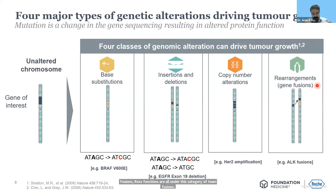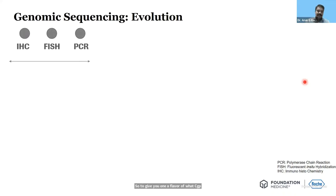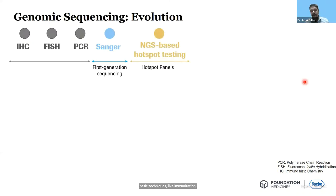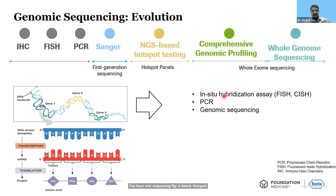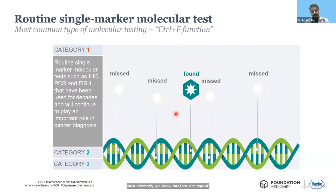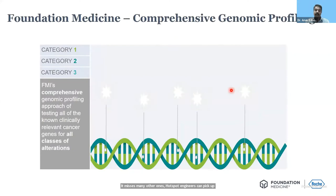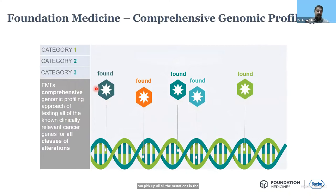The technology to pick up such genetic aberrations should efficiently pick up all four types across the genomic organization. To give you a flavor of what CGP or comprehensive genomic profiling is: you have basic techniques like immunohistochemistry, FISH, and PCR, Sanger sequencing, NGS-based hotspot testing, and comprehensive genomic profiling. Tests like IHCs, PCRs, and FISH are very focused to pick up only specific hotspots and have a good chance of missing many other markers. Hotspot NGS can pick up, say, two out of four mutations in a gene, whereas comprehensive genomic profiling picks up all mutations in the particular gene — no stones left unturned.